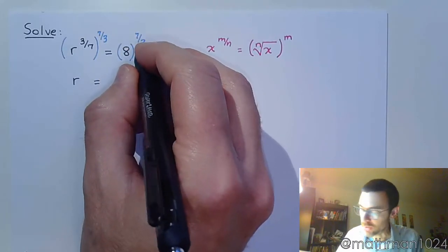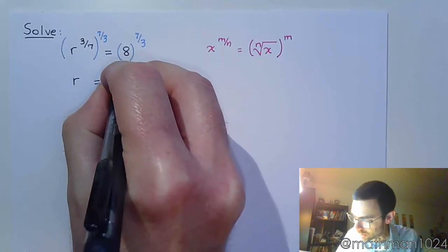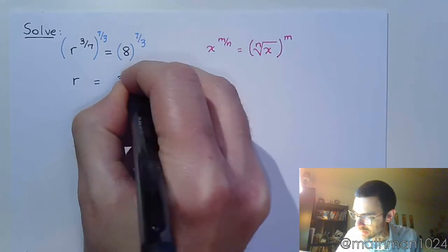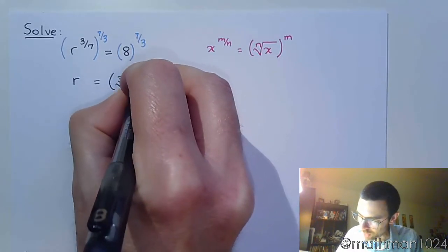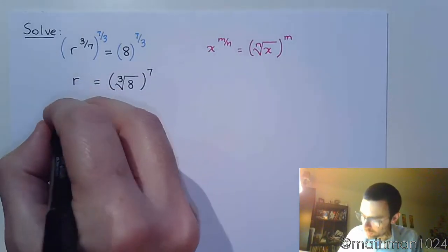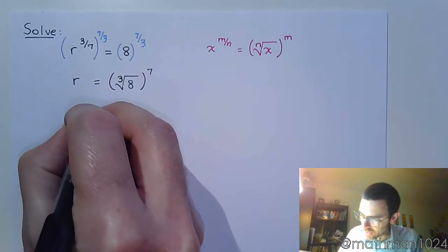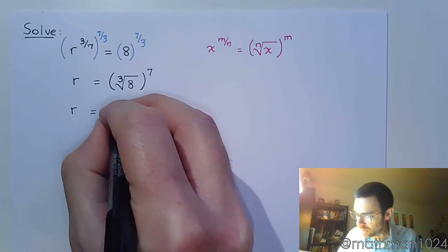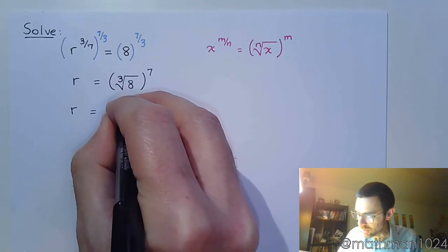Here the denominator is 3, so that means I'm dealing with the cube root of 8, and once I'm done with that, I'm going to raise this to the seventh power. Well, the cube root of 8 is one of those guys that we know - that's just going to be 2. So now I'm looking at 2 to the seventh.